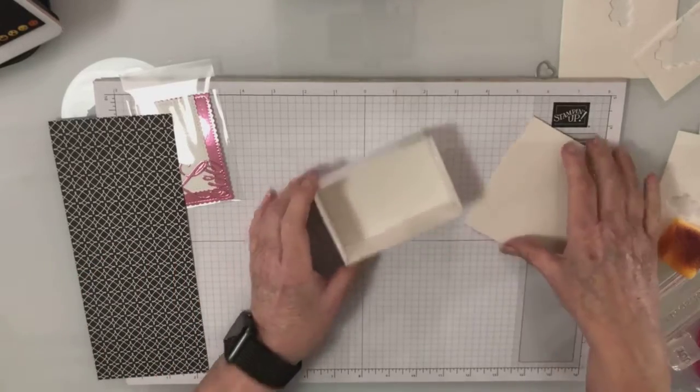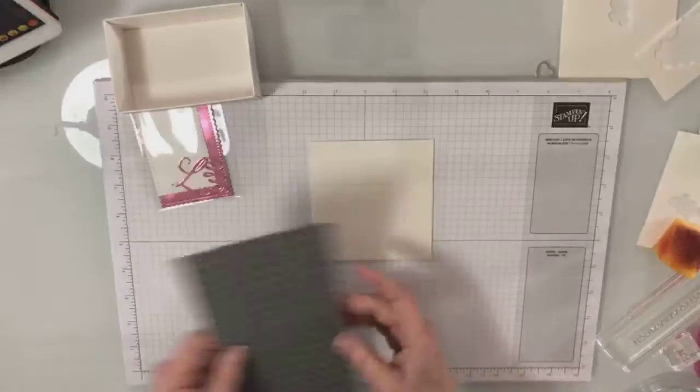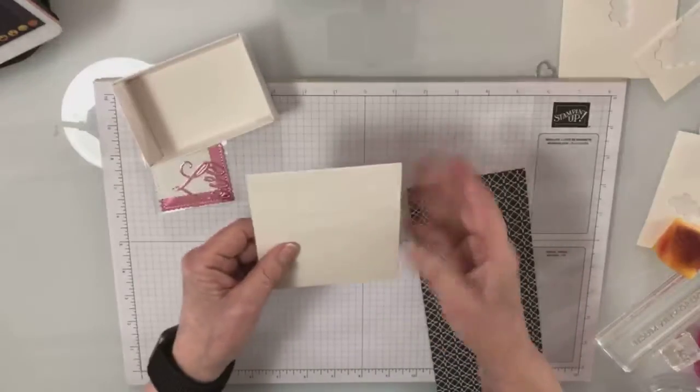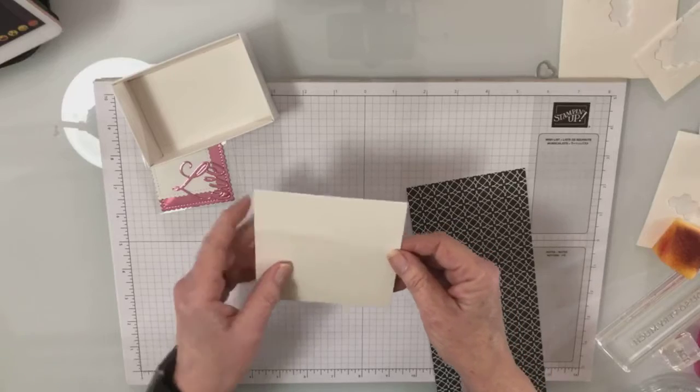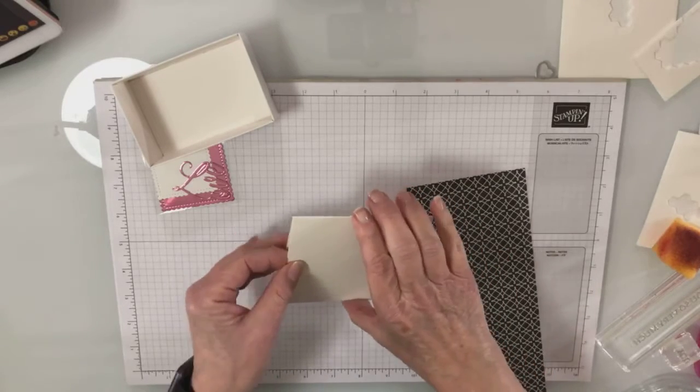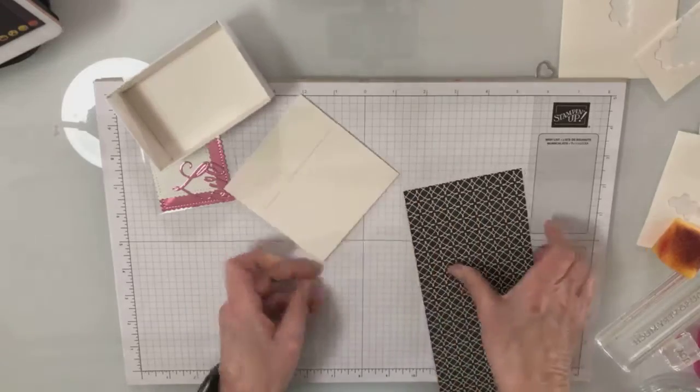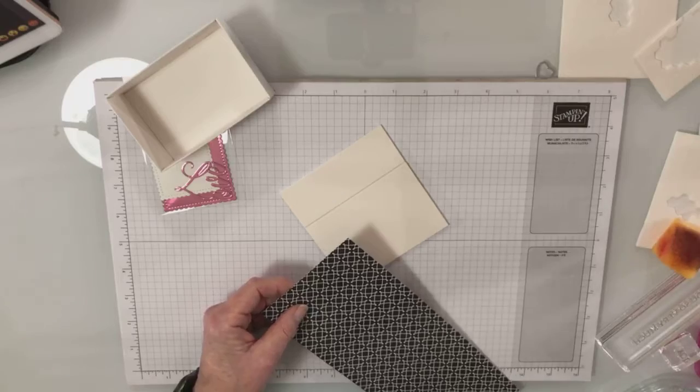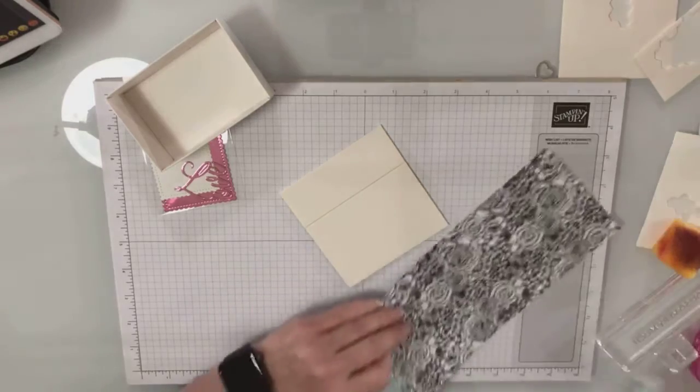This one then goes down. This one goes in this way and just really secures it all. That is putting the box together, very simple. Then we're going to take the cover and the cover slides over top of it. It slides into there.